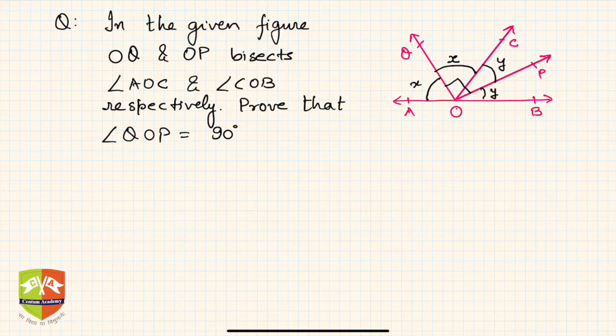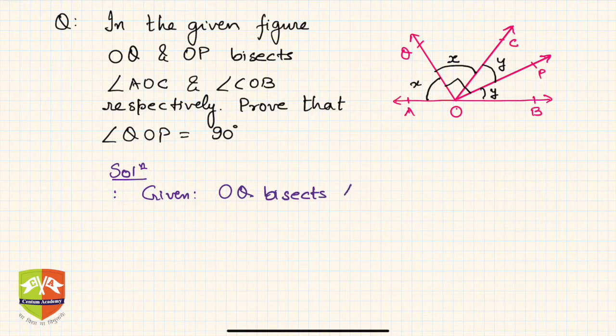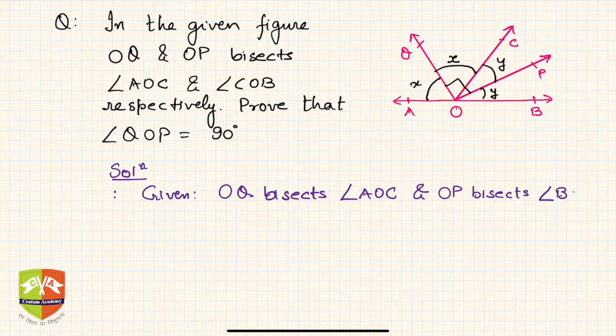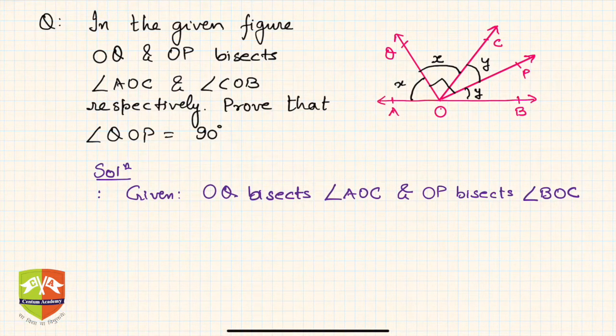When writing your solution, you start by stating what is given. You might think this is double work since it's already stated, but this is standard procedure for solving geometry problems. It gives you clear understanding and ensures you don't miss critical information. The given information is: OQ bisects angle AOC and OP bisects angle BOC.